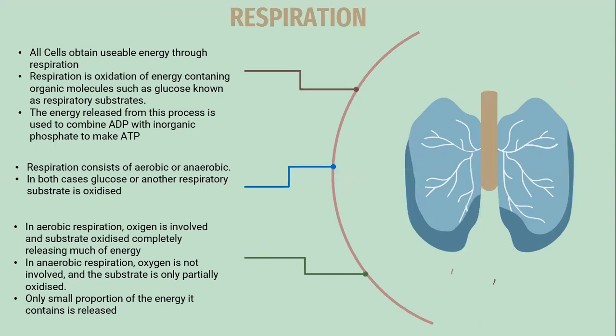All cells obtain usable energy through respiration. Respiration is the oxidation of energy-containing organic molecules such as glucose, known as the respiratory substrate. The energy released from this process is used to combine ADP with inorganic phosphate to make ATP. Respiration consists of aerobic or anaerobic forms. In both cases, glucose or another respiratory substrate is oxidized. In aerobic respiration, oxygen is involved and the substrate is oxidized completely, releasing much energy. In anaerobic respiration, oxygen is not involved and the substrate is only partially oxidized, so only a small proportion of energy is released.